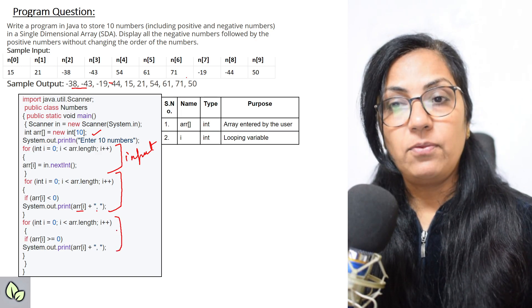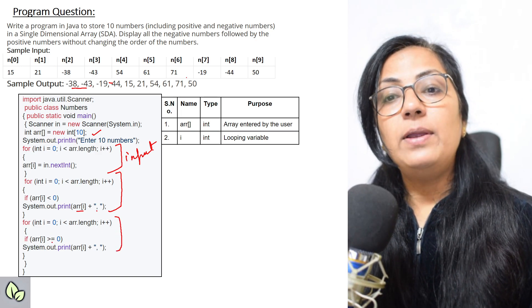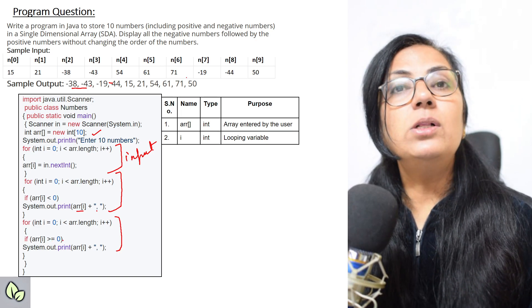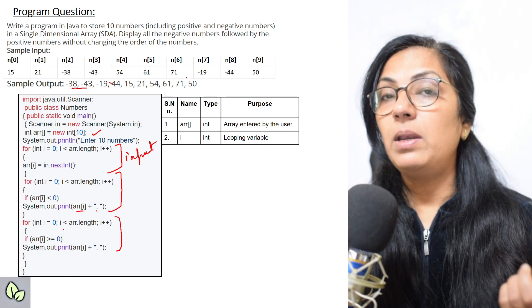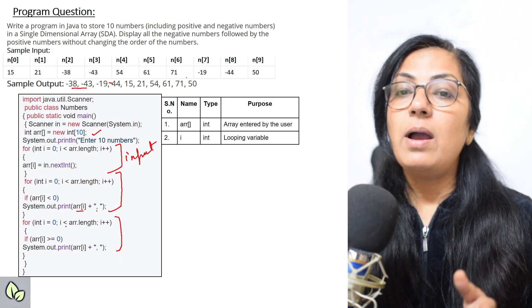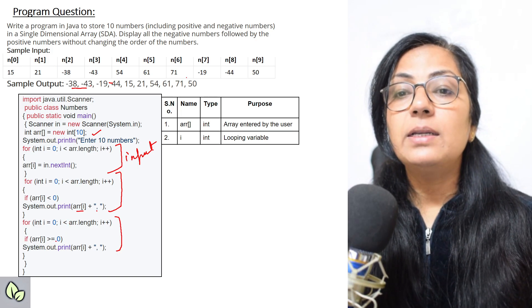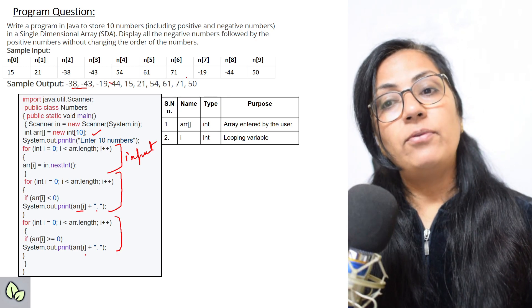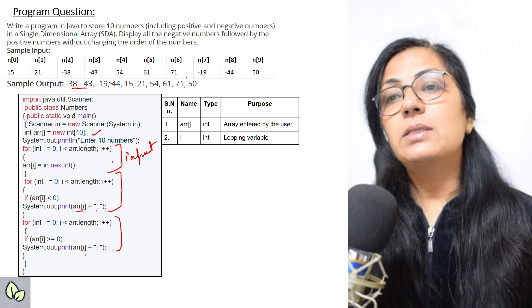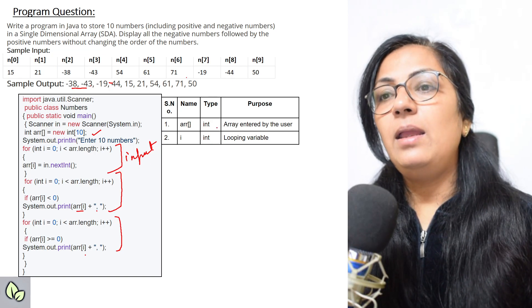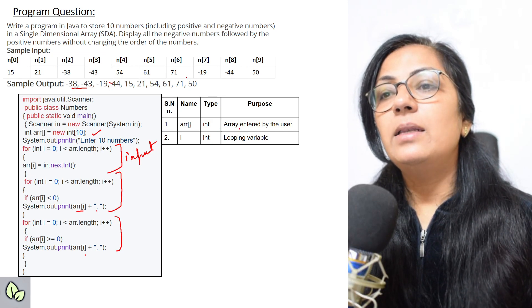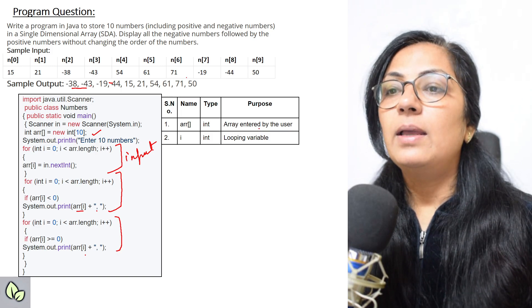Once we have completed all the negative elements printing, then again what we have to do? We have to use the positive ones. So here, if it is greater than or equals to 0, you have to take 0 also. If it is greater than equals to 0, now you have to print that variable. Description table also I have written here: arr, one array int type array, this is used for the array entered by the user, and i is the looping variable. We have not used any other variable apart from this.